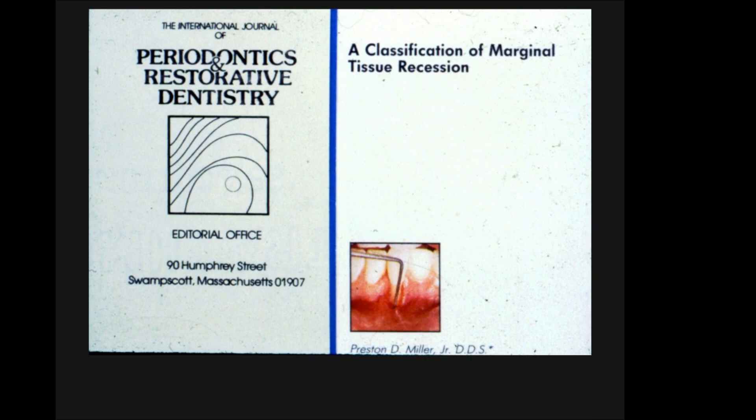Why did I use the term marginal tissue rather than gingival recession? One of my mentors was Dr. John Pritchard, who was a stickler for proper nomenclature. He asked me: when you have recession, do you know whether you had alveolar mucosal recession or gingival recession if you don't have a history? Paying attention to that, I used the term marginal tissue recession, which I think is more appropriate.